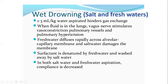You need 50 mills for 50 kg body weight to make the gas exchange impacted. After fluid enters the lung, the vagus nerve will be stimulated, causing constriction of the pulmonary vessels, and this can cause pulmonary hypertension.